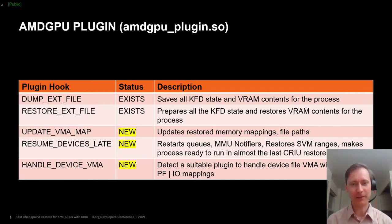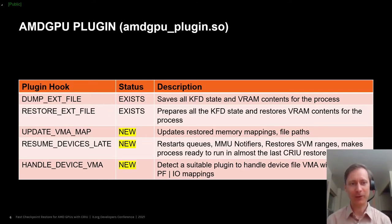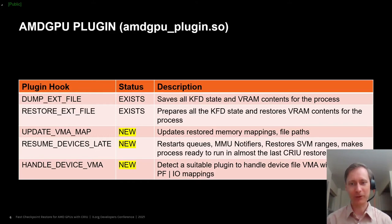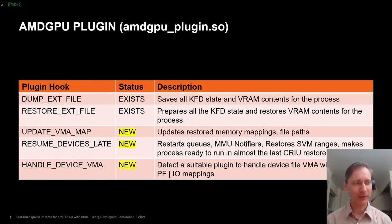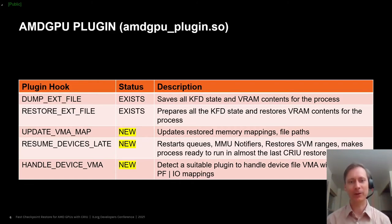Then we have a new hook for resume_devices_late. This is called at the final stage, after all the VMAs have been restored to their original virtual address locations. We have to wait until this very late stage — which is way after the restore_ext_file stage — to resume execution of the GPU queues and to restore MMU notifiers that are sensitive to the virtual address mappings and their virtual addresses. Finally, we added a handle_device_VMA plugin hook, which is basically a query for CRIU to say: I'm seeing a VMA for a device file — do I have a plugin that supports those VMAs? In the case of VMAs for DRI render nodes, our plugin will return yes, indicating it knows how to deal with these, so CRIU can safely save those VMAs.